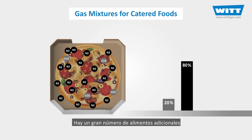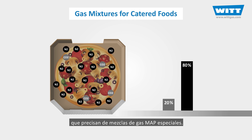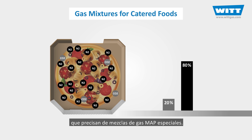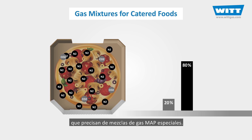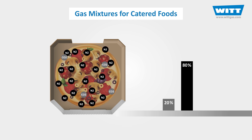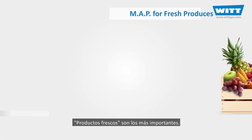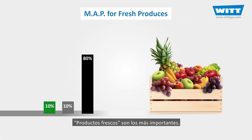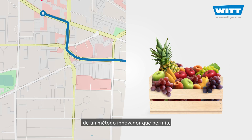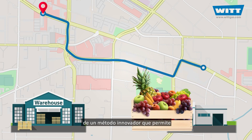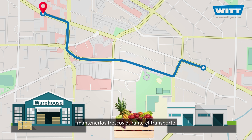There are lots of other food categories requiring specific MAP gas mixtures. Fresh produce is one of the most important types, and we'll show you in another video a new exciting method for keeping them fresh during transport.